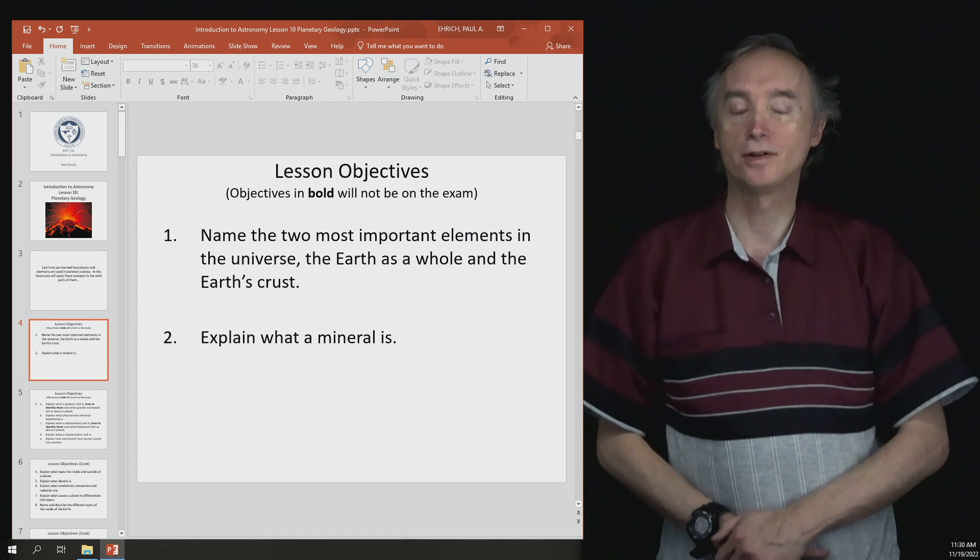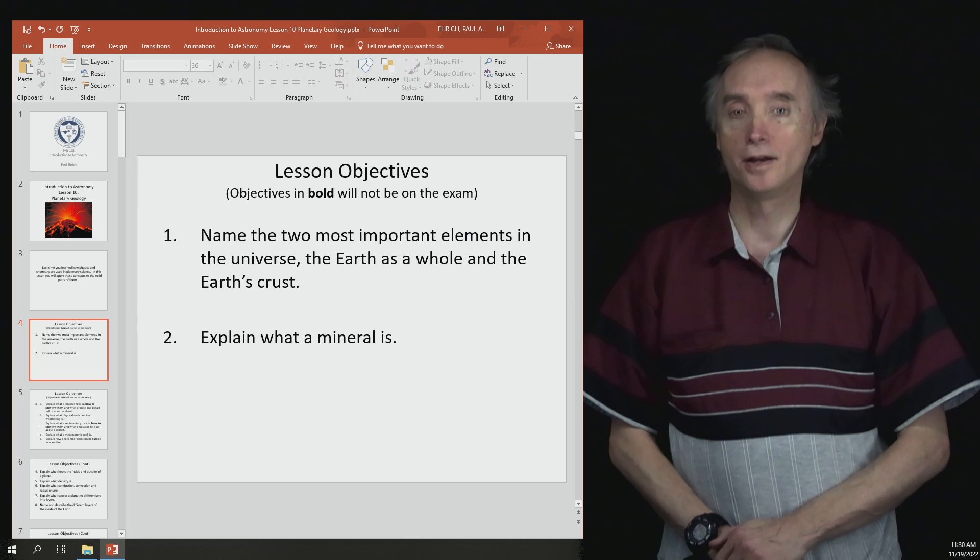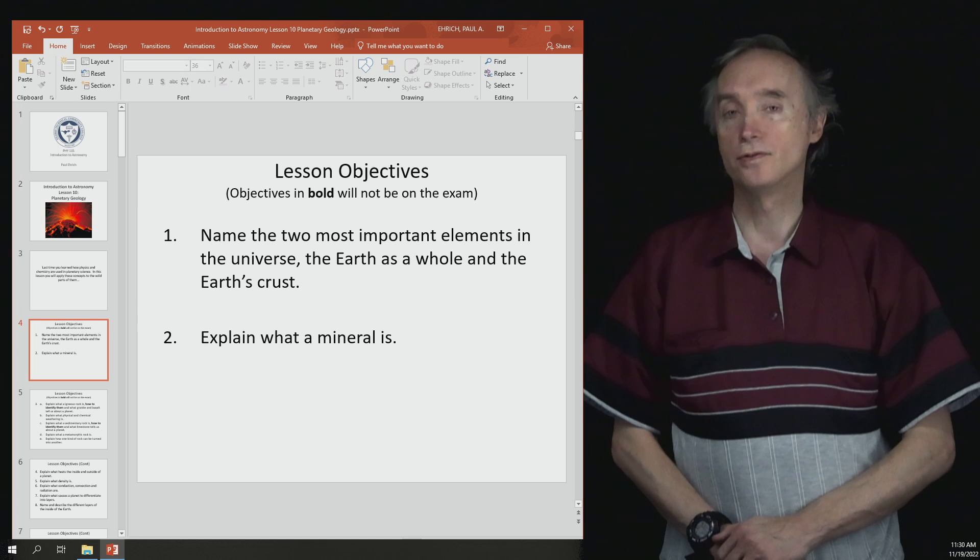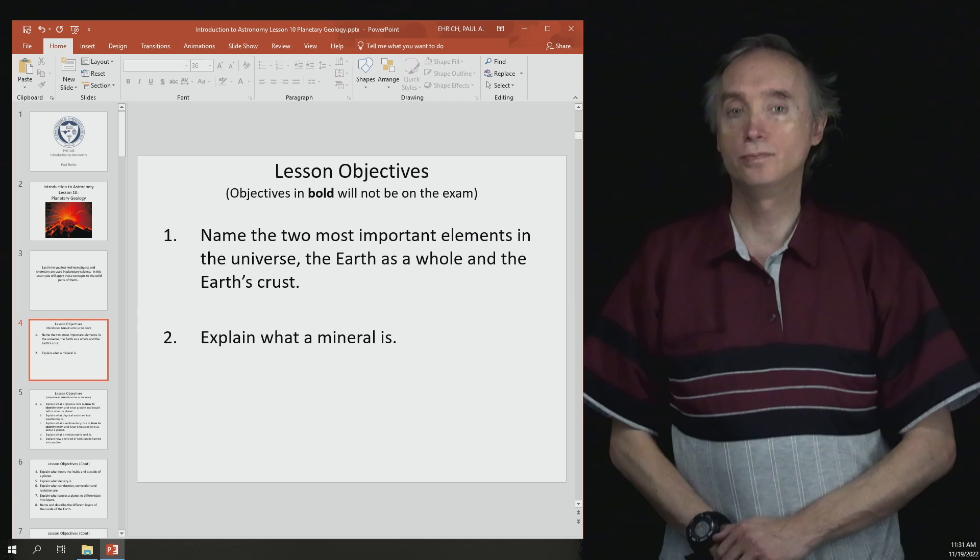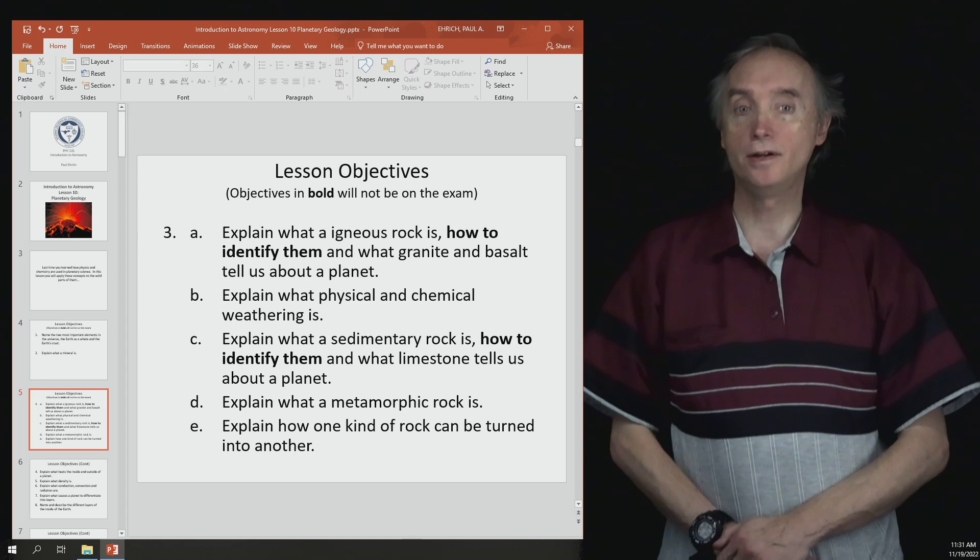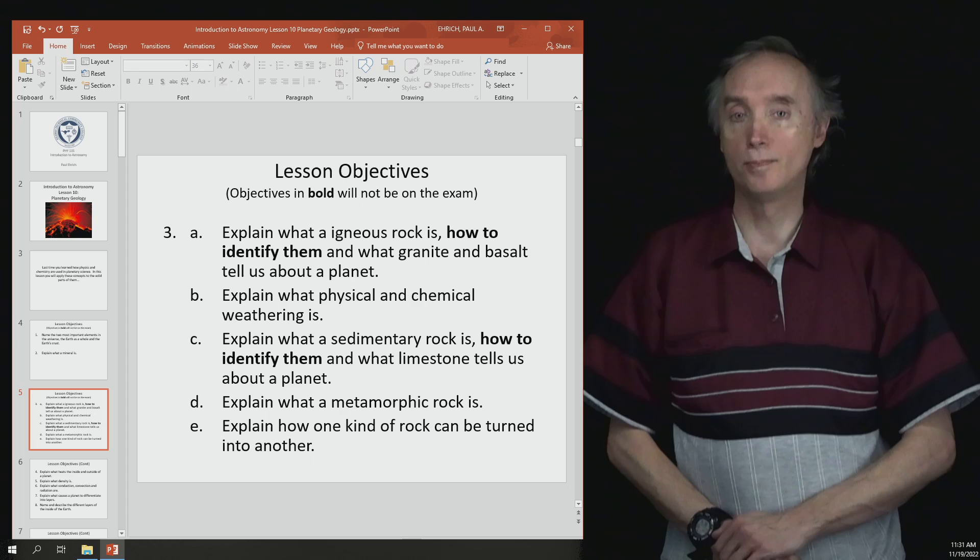Here's what you should learn by the time you get finished with this lesson. Number one, name the two most important elements in the universe, the two most important elements found in the Earth, and then the two most important elements found in the Earth's crust. You should be able to explain what a mineral is, explain what an igneous rock is, be able to identify an igneous rock, and specifically know about the igneous rocks granite and basalt.